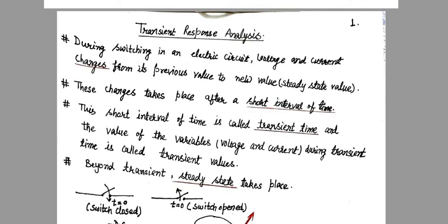There was some current flowing in the circuit, and after that change, again there will be some current flowing in the circuit. But there is a short interval of time, and this time is called the transient time, and the value of these voltage or current during transient time is called the transient values.